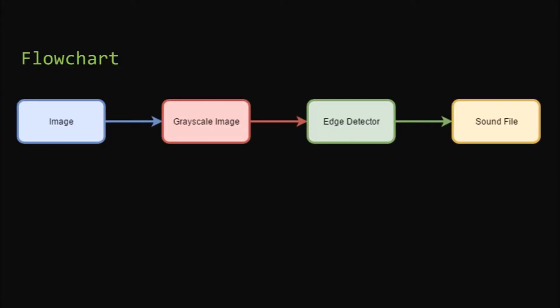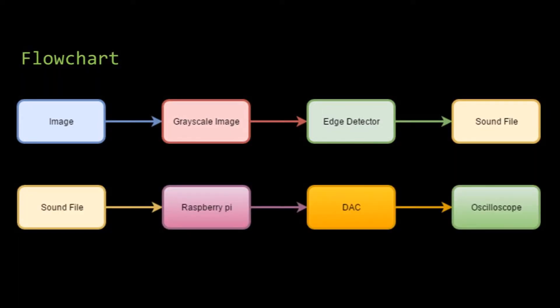Here is the basic flowchart of my program. It starts out with an image that is loaded into a MATLAB program. This program detects the edges in the image and produces a grayscale image. The XY coordinates are placed into two arrays which are converted into a sound file. The sound file is loaded onto a Raspberry Pi which then plays the sound through its jack. It is connected to an oscilloscope and the original image is reproduced.